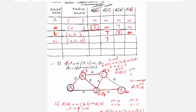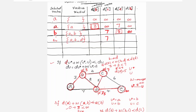With selected vertex D, compute D to E: d(D) + w(D, E) = 5 + 4 = 9 < infinity — true. Update d(E) from infinity to 9. In the table, write the value 9.